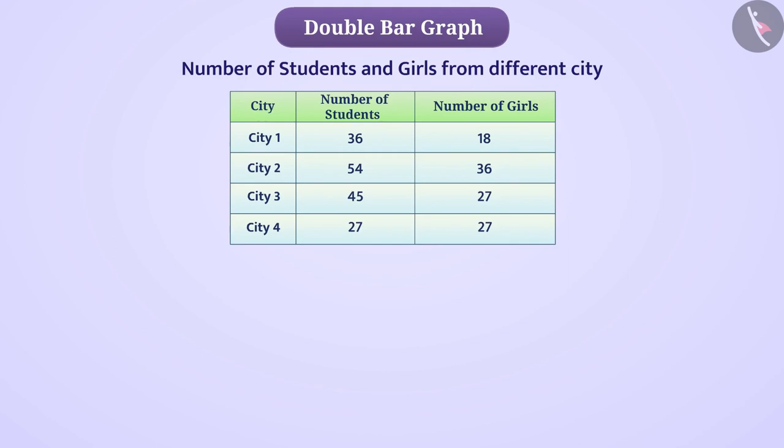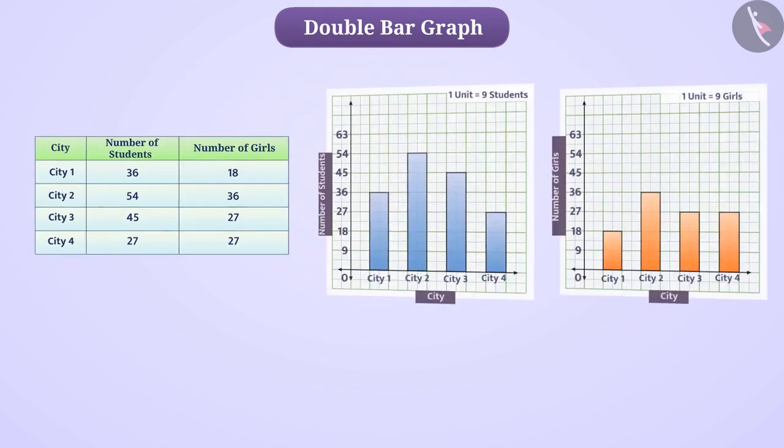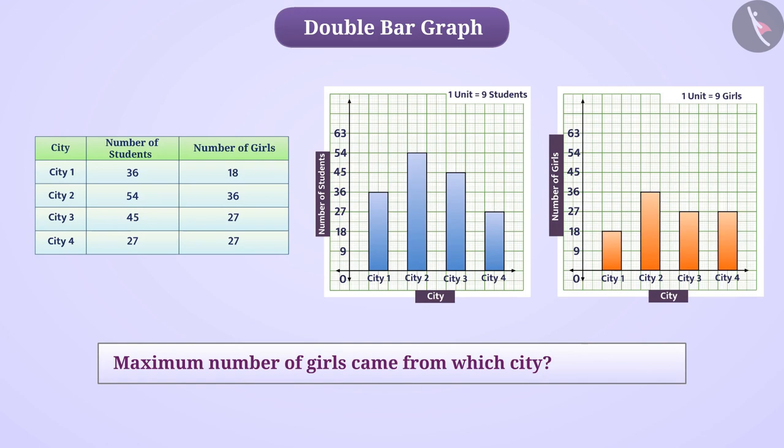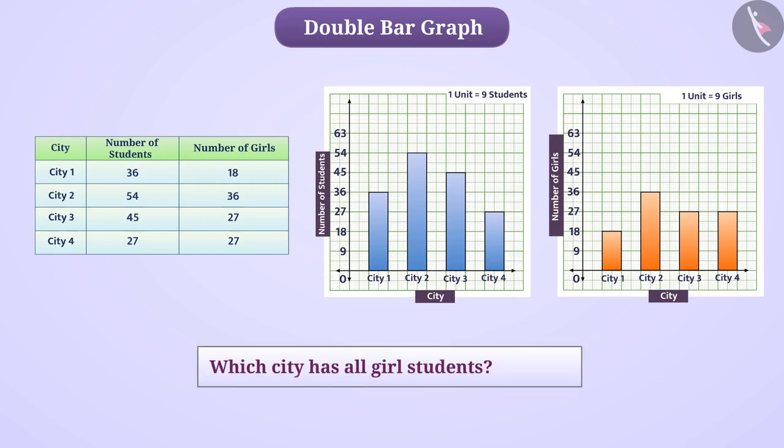Let us represent this data in different way. If we draw different graphs for both these tables, we can get information such as maximum number of girls came from which city. But if we are required to get combined information like which city has all girl students, then how we can find it?